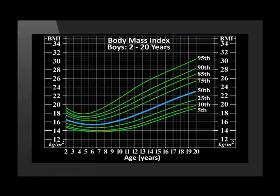Another typical exam question asks to explain why the BMI lines initially dip before increasing. This dip occurs between the ages of 2 and 6 years of age. The reason is that children tend to grow in height quicker than their weight increases during this period, causing an initial dip in BMI. Past the age of 7, the weight of the individual increases more than the height, and therefore the BMI values begin to increase with age from 7 to 20 years of age.